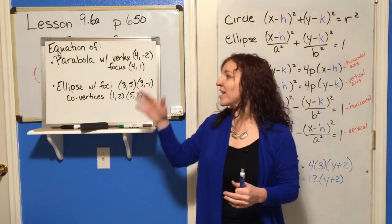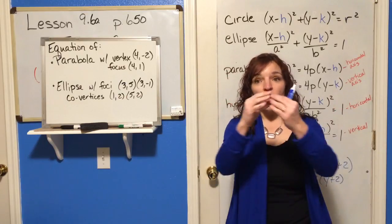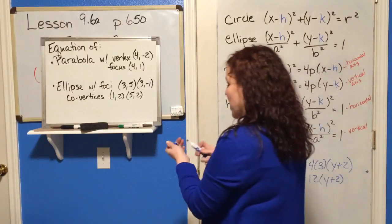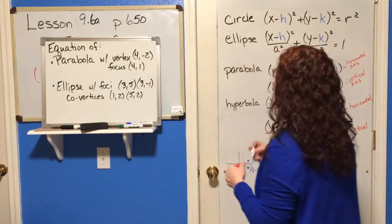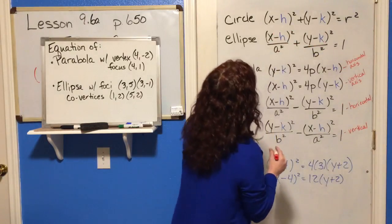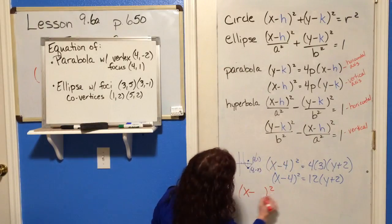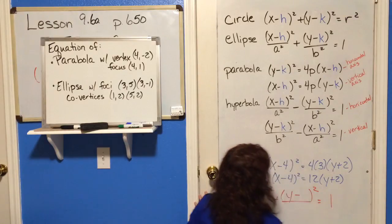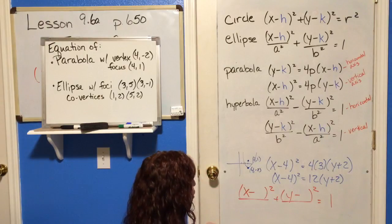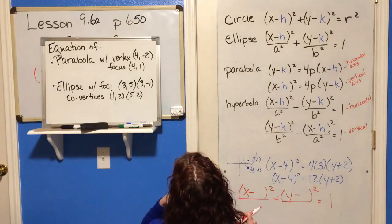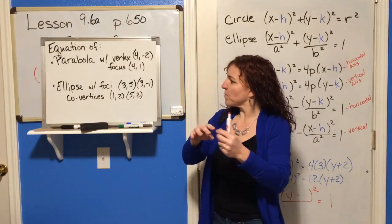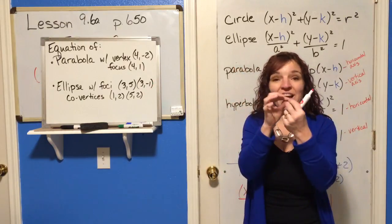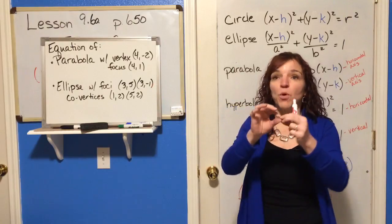Remember what co-vertices are: an ellipse is an elongated shape, the vertices are on the long direction, and the co-vertices are the vertices on the short direction. We'll use the ellipse skeleton: X minus H squared over A squared plus Y minus K squared over B squared equals 1. We don't have the center directly, but we can figure it out — if you find the midpoint between either the two foci or the two co-vertices, you'll find the center, since both are equidistant from it.